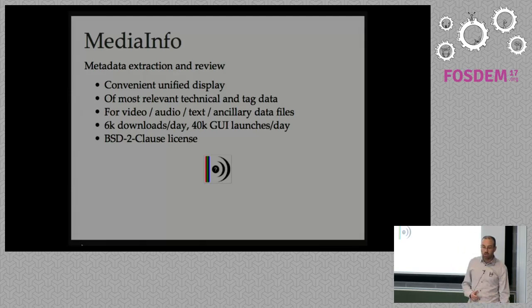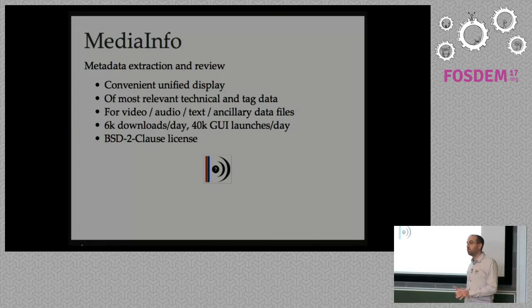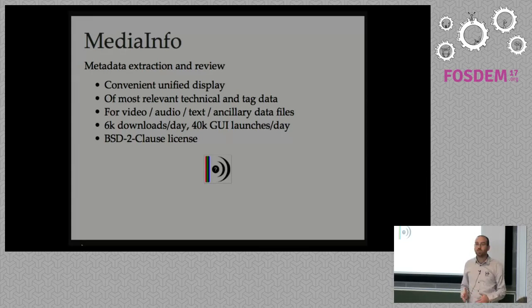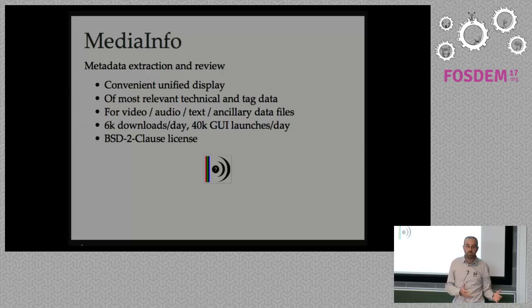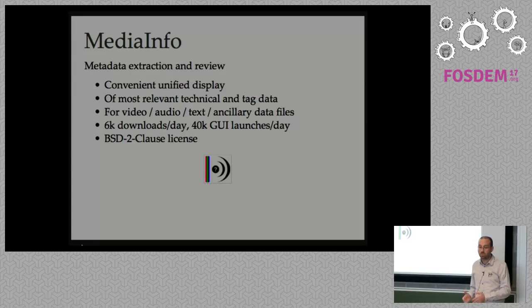MediaInfo shows the format, profile, level, width, height, bit depth of video or audio, subtitles, captions, and so on — not only broadcast formats but also professional content like ancillary data. In MXF files there can be dedicated ancillary data with timecodes or subtitles. FFmpeg is currently not able to handle such content, so MediaInfo is used to detect it, enabling other tools to be used.